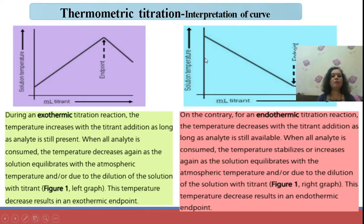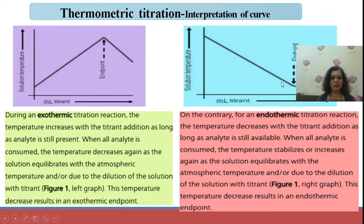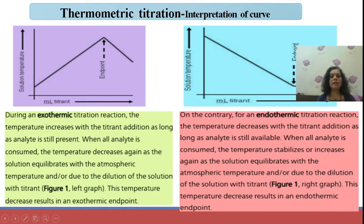Similarly, when performing an endothermic titration, the same plot of change in temperature versus mL of titrant added shows a decrease in temperature with each addition of titrant, continuing until all analyte is consumed. Once the analyte is fully converted to product, excess addition of titrant gives a slight increase in temperature or it may remain constant. Extrapolation of these straight lines gives the end point of the titration.